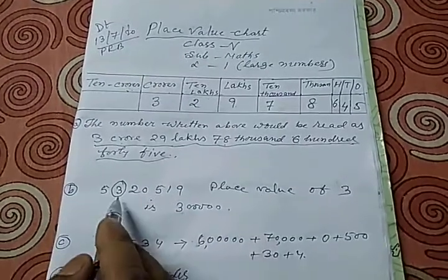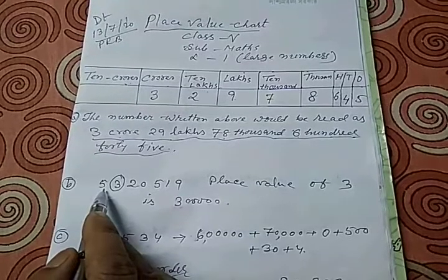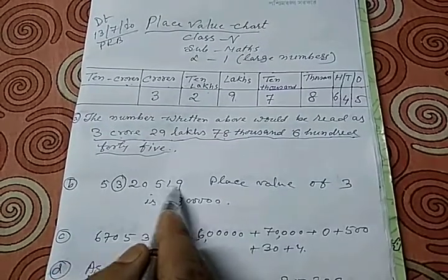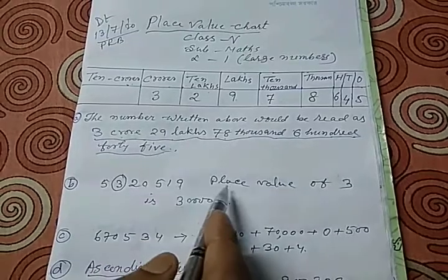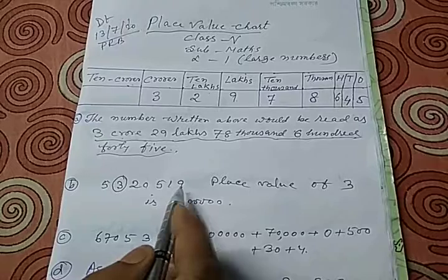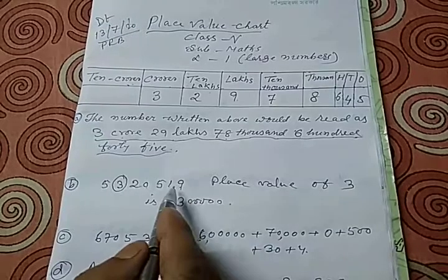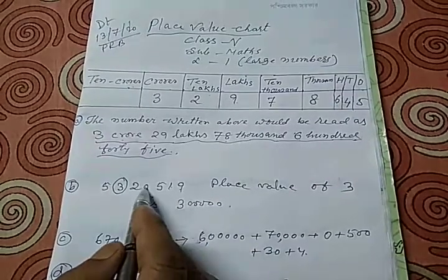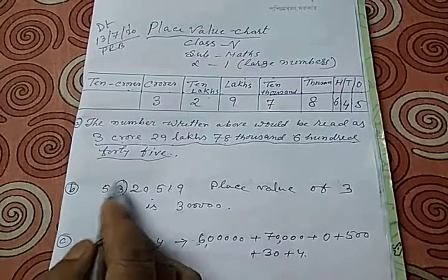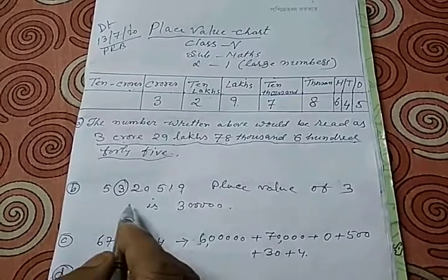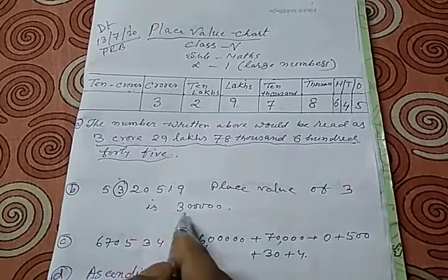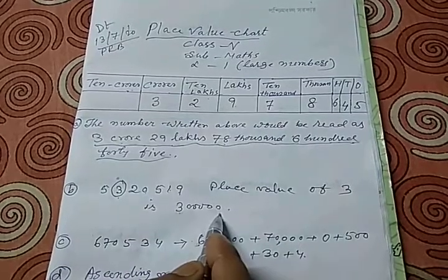Similarly, you have been given a number 5320519. You have to find out the place value of 3 from this number. You see that 3 is in 1, 10, 100, 1000, 10,000 lakhs. That is, 3 is in lakhs place. So we can write that the place value of 3 in this number is 3 lakhs.